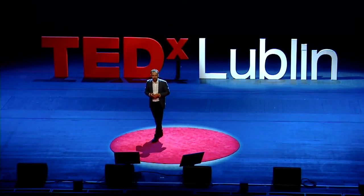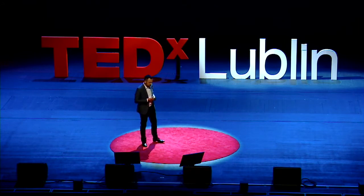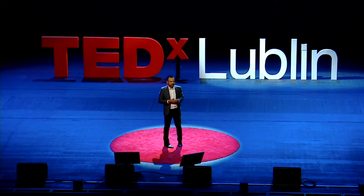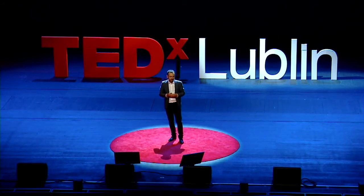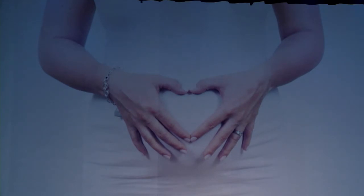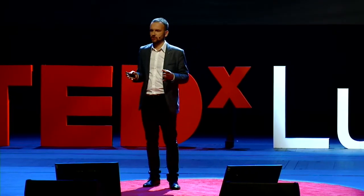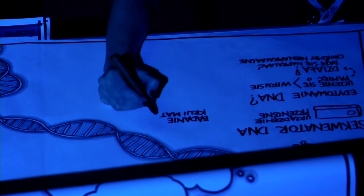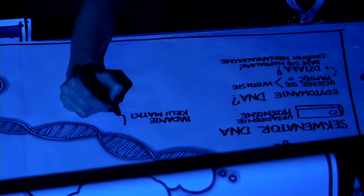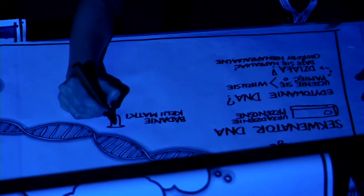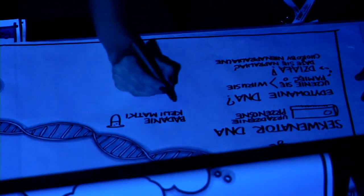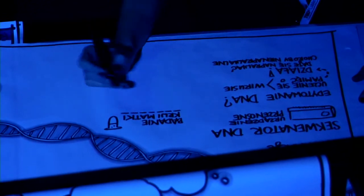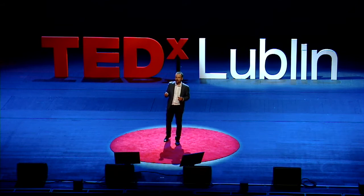W 1997 roku naukowcy badający krew matek stwierdzili coś bardzo ciekawego — znaleźli w krwi matki krew dziecka. Byli bardzo zdziwieni tą sytuacją. Okazuje się, że od 5 do 7 tygodnia ciąży w krwi matki pojawia się krew dziecka, którego nadal nie ma na świecie. I zaraz ktoś mądry stwierdził, że trzeba tą metodę wykorzystać do diagnostyki bardzo wczesnej, żeby już wcześnie próbować naprawiać te wady, które mogły się pojawić na tak wczesnym etapie rozwoju. Do tej pory technologia ta została wykorzystana już przez miliony ludzi i w Polsce jest dostępna.